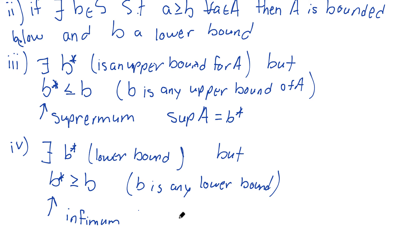And again, sometimes we'll write it as 'inf' — I-N-F — the infimum of A is B star. These ideas will become important later. In the next video, we'll talk about the completeness property.